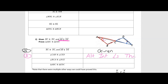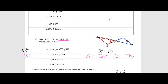Next, angle BCA is congruent to angle DCE — if we look at those angles, they are vertical angles, so the reason is the Vertical Angles Theorem. That's also a set of angles. Now I have two sets of angles and one set of sides. Is that side between the angles or outside? It's not between them — that would be side AC and side CE. So since it's outside, we're going to use AAS congruence.